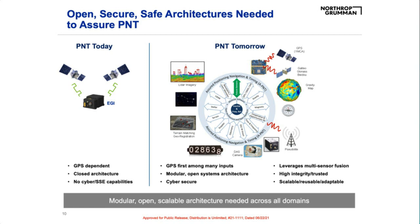Cybersecurity is a table-stake requirement for all future systems. The future we see is one where existing sensors can aid the navigation system when GPS is unavailable — leveraging onboard cameras or SAR images for vision-aided navigation, using electronic warfare systems to triangulate position from known signal locations, or using GNSS or new LEO constellations to validate GPS. None of these solutions are silver bullets and all have drawbacks, so a layered approach that can adapt among them is the best solution to make the adversary's job as hard as possible.